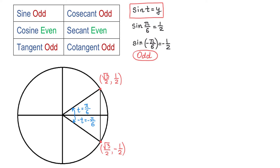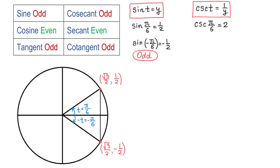Now, cosecant is the reciprocal of sine and, by definition, cosecant of t is 1 over y. Then cosecant of pi over 6 will be equal to 2 because this is the reciprocal of 1 half.